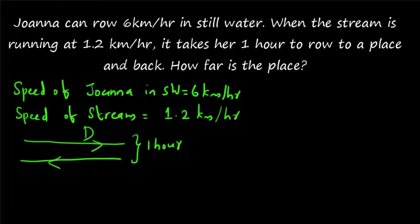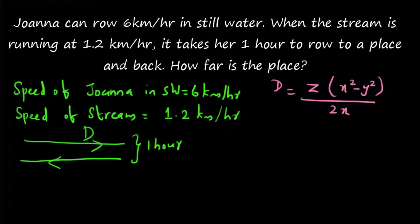For these kinds of questions there is a direct formula. The distance d is equal to t times (x squared minus y squared) divided by 2x. Here, x is the speed in still water and y is the speed of the stream — these are the standard representations. t represents the time taken. So the formula is: d = t(x² - y²) / 2x.